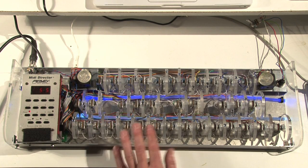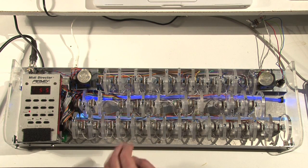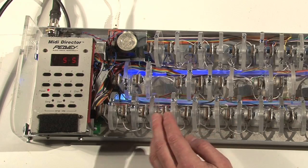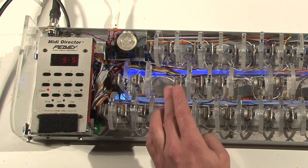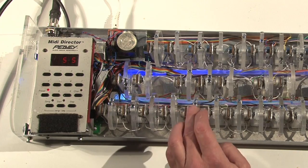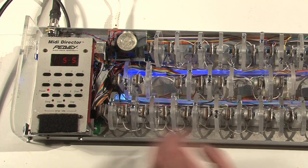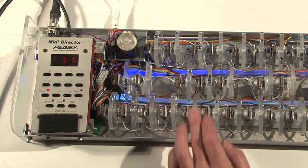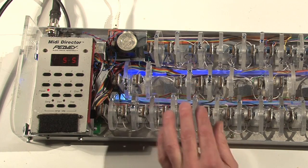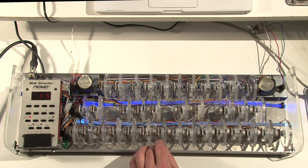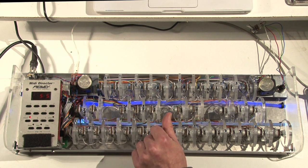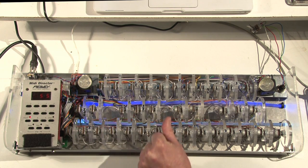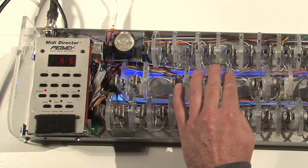Now, the next section is the envelope section. We have an amplifier ADSR, so you get attack, decay, sustain, and a release, so if you want to get some sustain on the note. You also have a filter envelope.